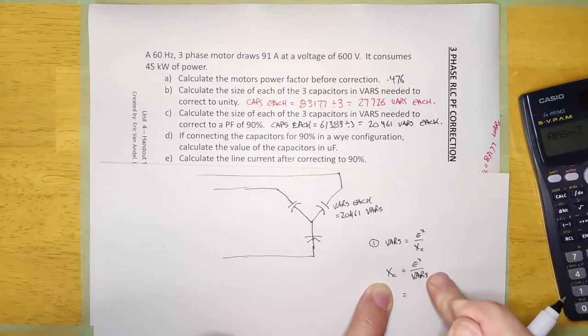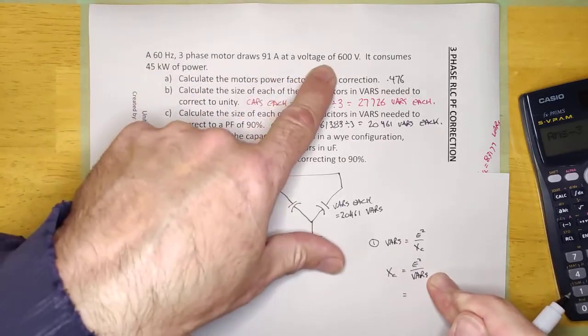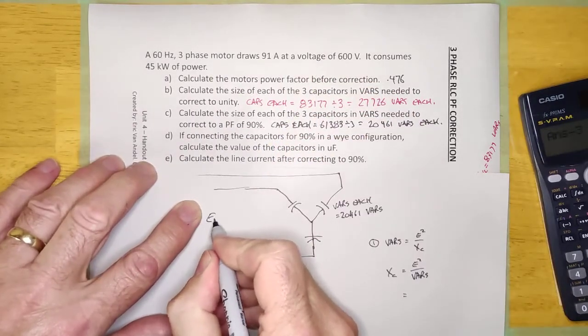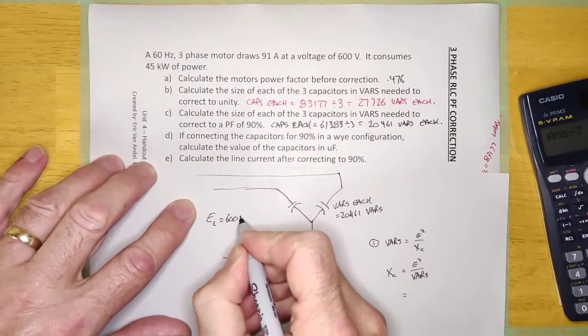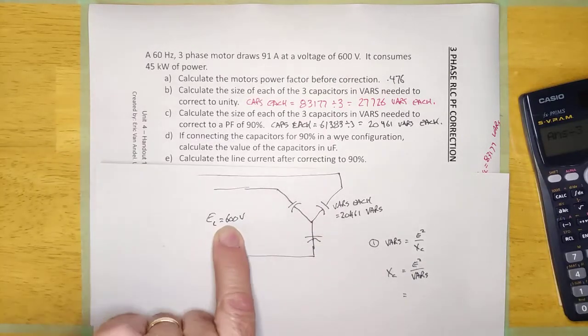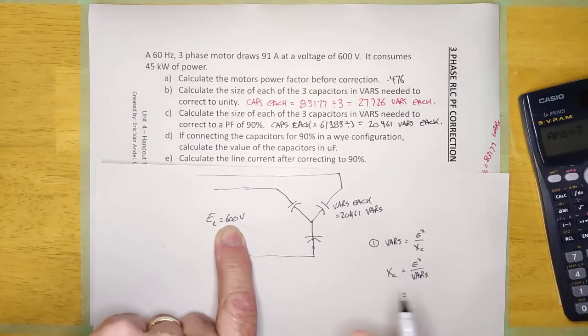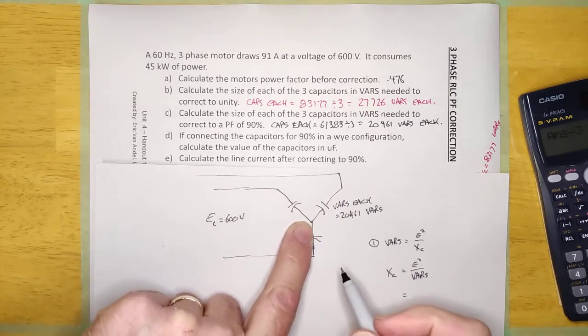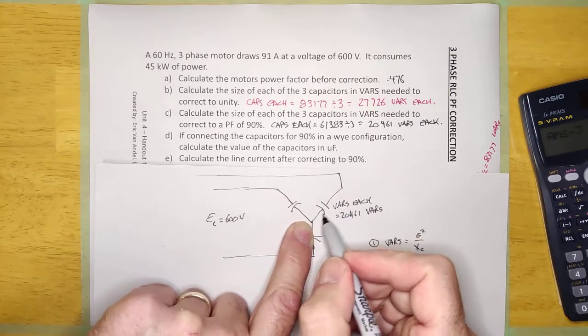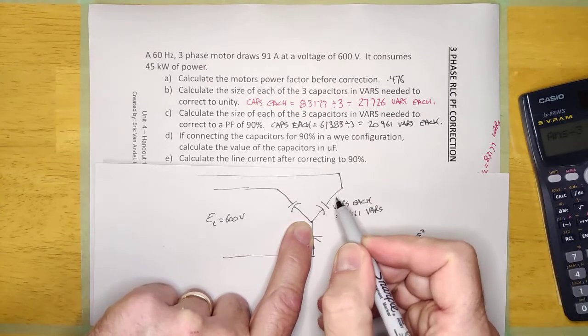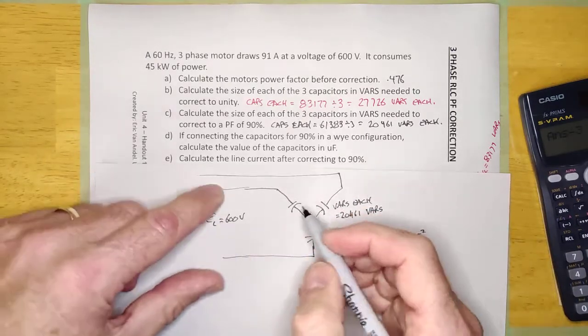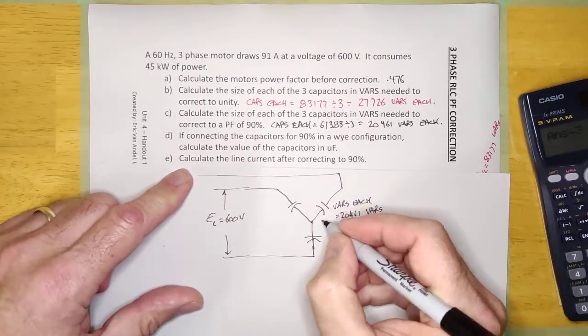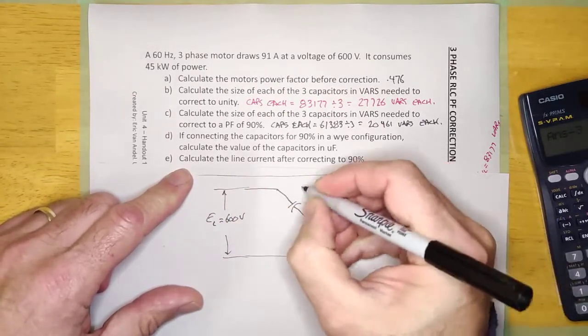Now, here's the trick here. This is 600 volts. That is the line voltage. E line is 600 volts. But I can't use 600 volts in this formula because that guy doesn't see 600 volts. It's connected Y. So, it sees 346.4, basically. If this line voltage is 600, what is the capacitor actually connected to? E phase.